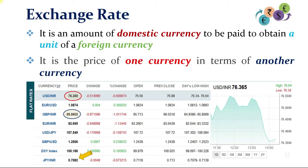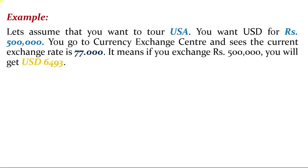After looking at this, we can say that the exchange rate is the number of units of domestic currency that we have to pay to get one unit of foreign currency. For example, let us assume that you want to tour the USA and you need US dollars for 5 lakh rupees. You will go to a currency exchange center and see the exchange rate as rupees 77, meaning for every dollar you have to pay 77 rupees.